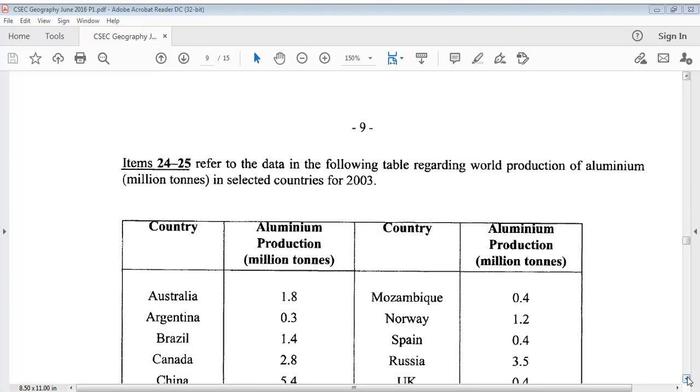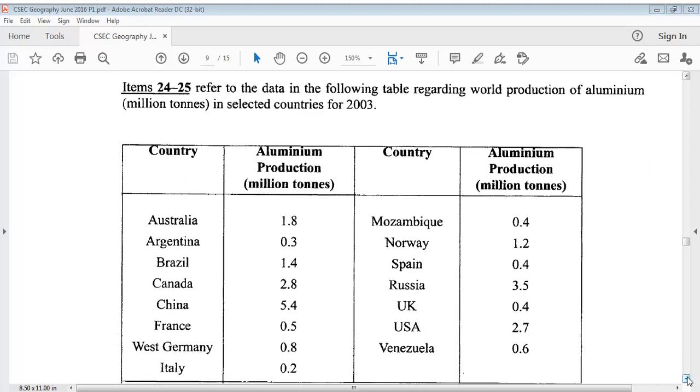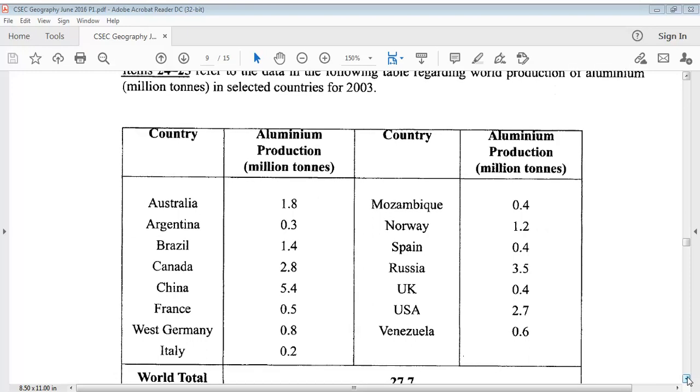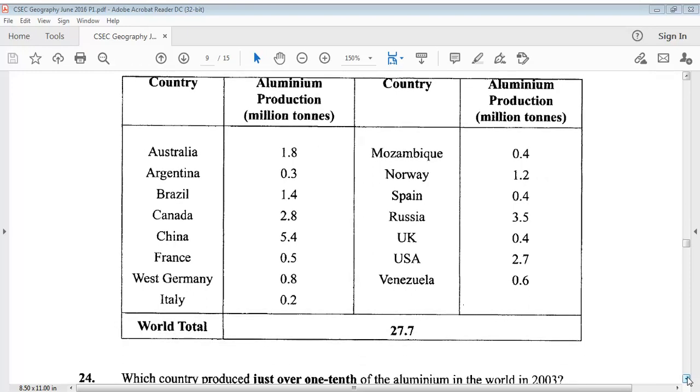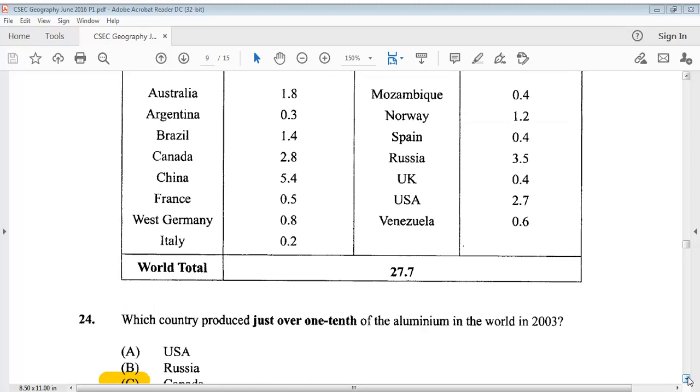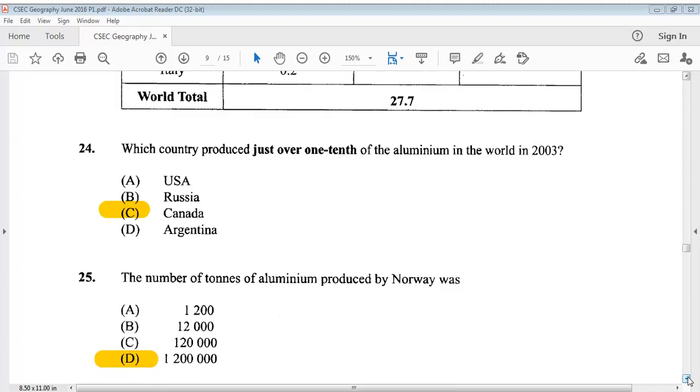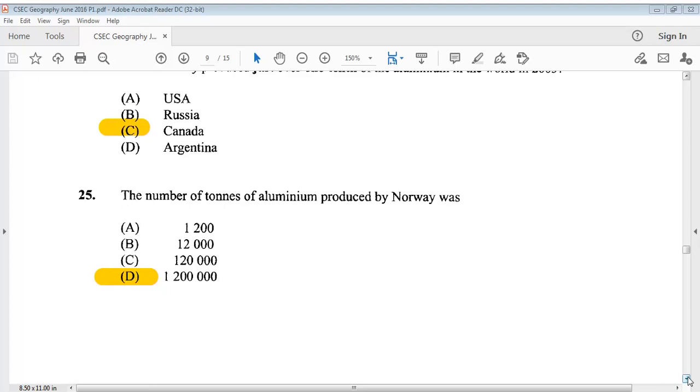Items 24 to 25 refer to the data in the following table regarding world production of aluminum, million tons in selected countries for 2003. You can take a look at your table. Question 24: Which country produced just over one-tenth of the aluminum in the world in 2003? The answer is C, Canada. Question 25, the number of tons of aluminum produced by Norway was? The answer is D, 1.2 million.